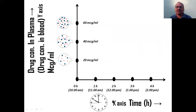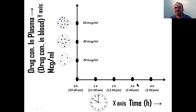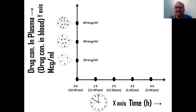On the x-axis we always take time — you can take it in minutes or hours. This is zero hour at zero concentration. For example, if the patient takes the drug at 10 o'clock, after one hour we call it one hour, two hour, three hour — we take samples at 11 o'clock, 12 o'clock, 1 o'clock, 2 o'clock every one hour. This is the time scale — hours or minutes. On the y-axis we take drug concentration in the plasma.